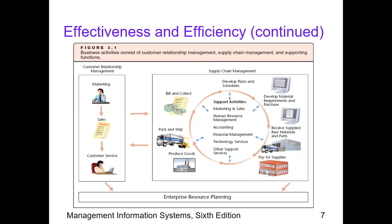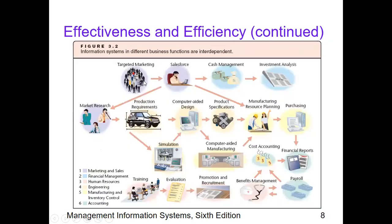Basically, the flow begins with developing plans and schedules. From there, we look into the material requirements needed for production. We receive the supplied raw materials and parts purchased on account, then pay for supplies. With the supplies, we produce our goods; with confirmed orders, we pack and ship, then bill and collect receivables. These items form part of our overall corporate enterprise resource planning, or ERP, system.